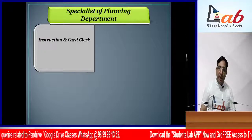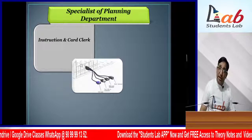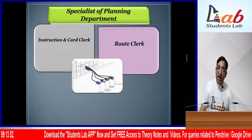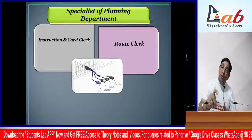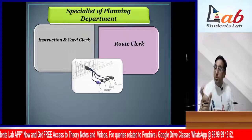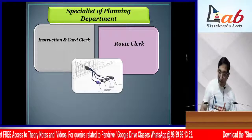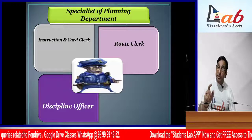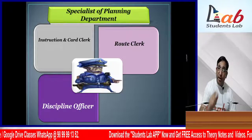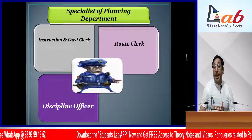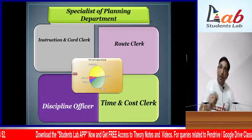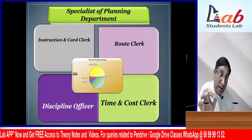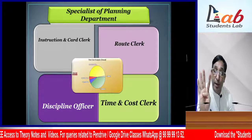In the Planning Department there are 4 foremen. First is the Instruction and Card Clerk - their job is to give instructions: what work will be done, when and how it will be done, what material and machinery will be used. Second is the Route Clerk - who decides what routes the product will go through: first process, second process, third process, fourth process - deciding the route. Third is the Disciplinary Officer - who checks that all routes and materials are passing properly and proper discipline is maintained. Fourth is the Time and Cost Clerk - whose job is to decide how much time and cost a task will take.